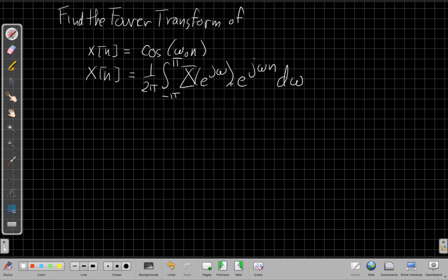So if I can use a bunch of steps to get from cosine to something that looks like this, whatever is in here will be my Fourier transform, because we know the Fourier transform is a unique one-to-one matching between x[n] and X(e^(jω)). So let's see how we do that.